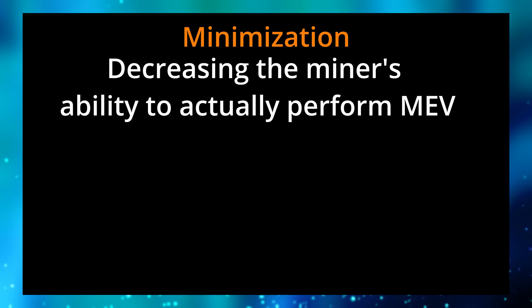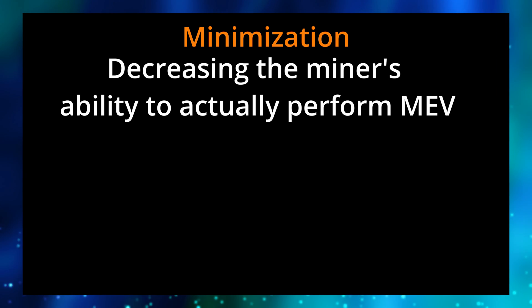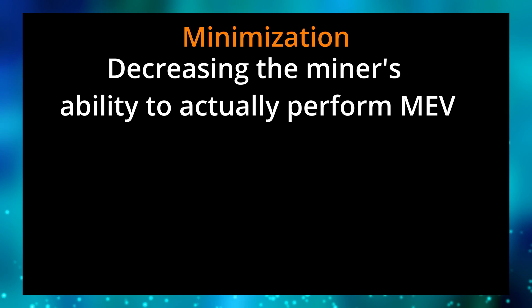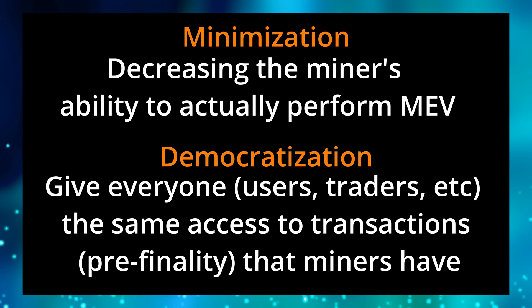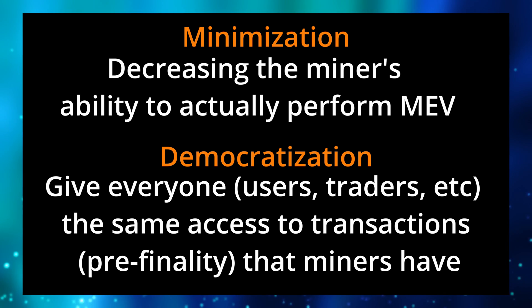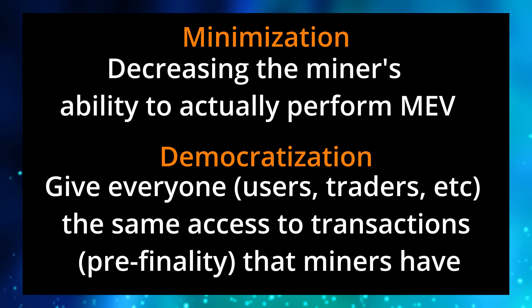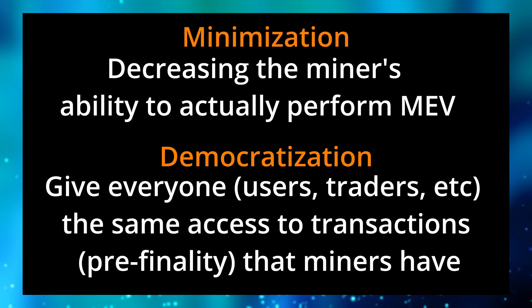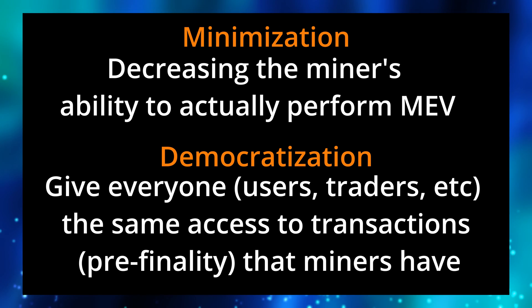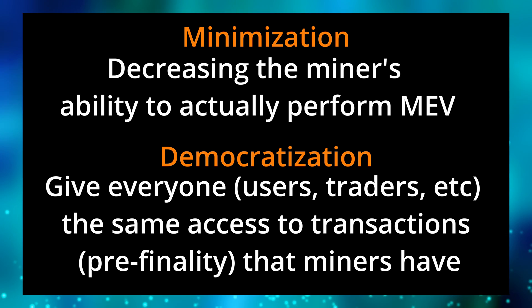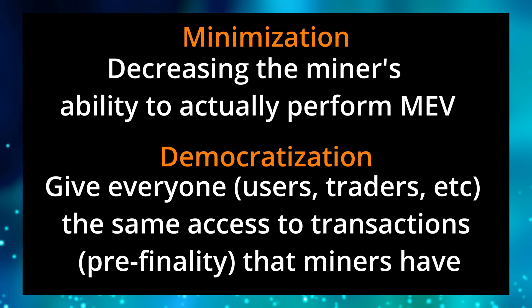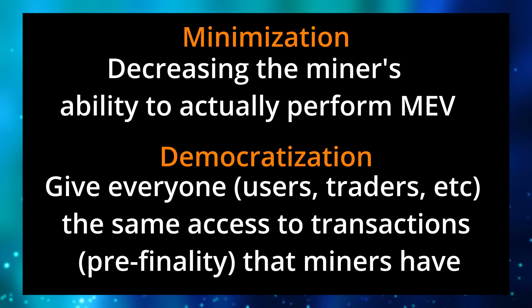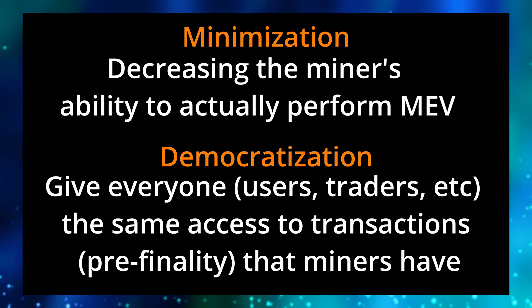There are two different ways to fix MEV. Number one is minimization — decreasing the miner's ability to actually perform MEV in the first place. Number two is democratization — giving everyone, users and traders, the same access to transactions pre-finality that miners have. Miners and bots have access to a mempool that technically users could access, but it's not easy — you have to go through a lengthy process, and if you're not technical, you have no idea how to do it. Democratization is really just evening out the playing field.